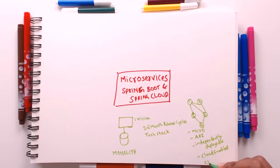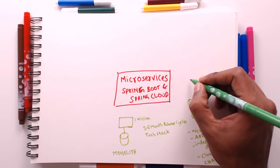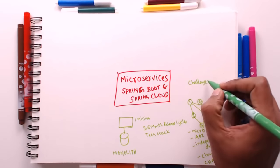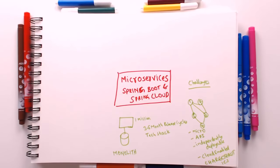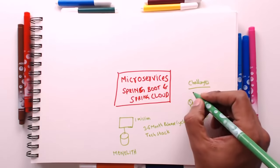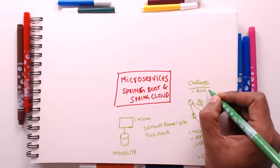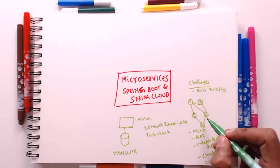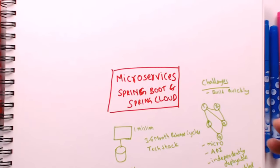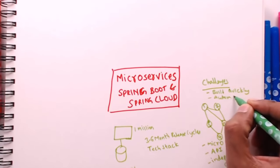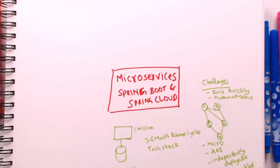Now what are the challenges? Microservices do not come free — there are a number of challenges associated with building microservices architectures. Instead of building one service, we're building five. You should be able to build applications quickly — it should not take two months to set up the framework for a microservice. There should be a lot of automation because everything, from how you build the application to how you take it live, should be completely automated.